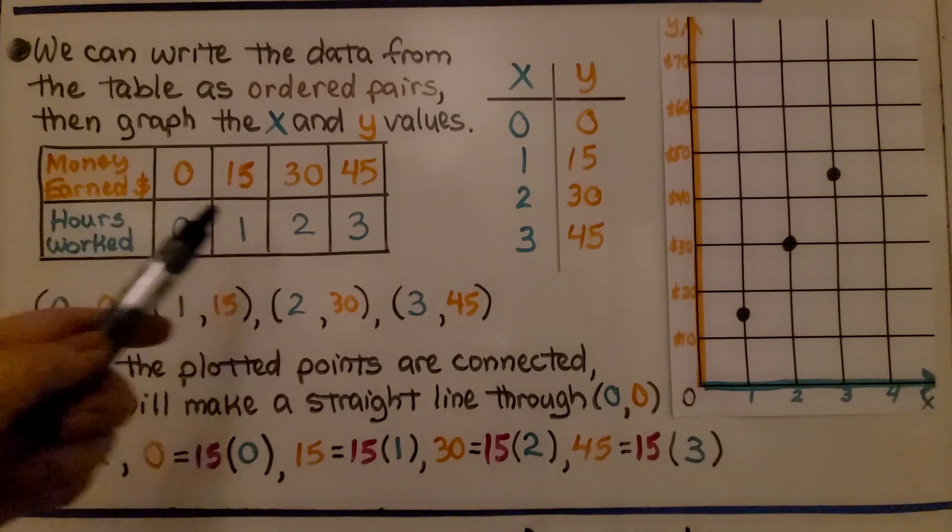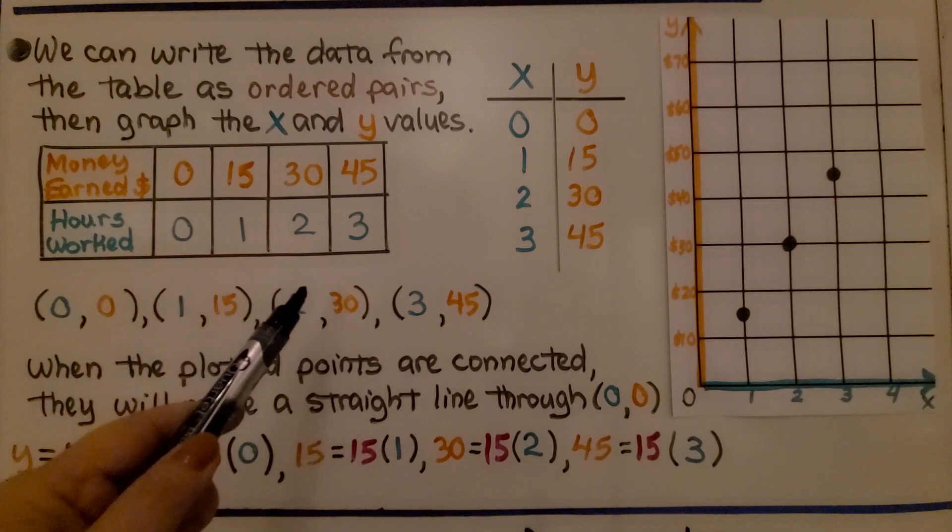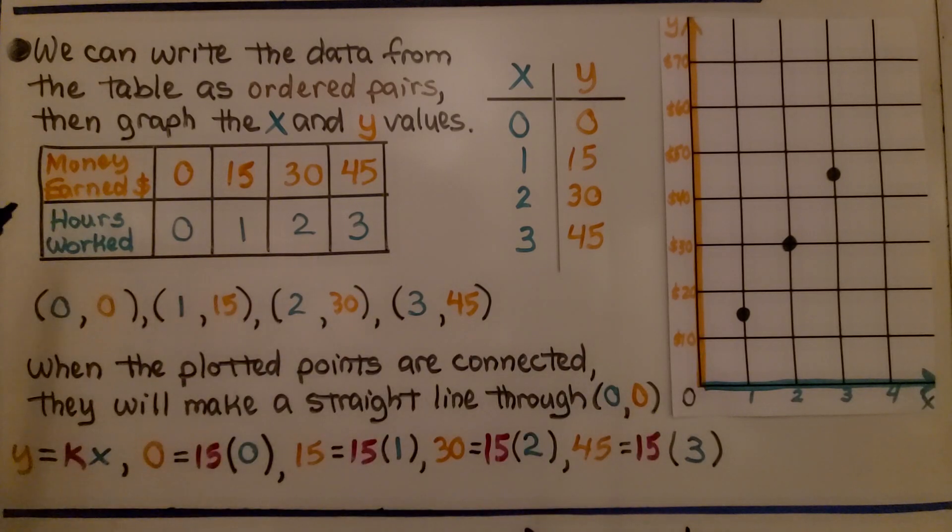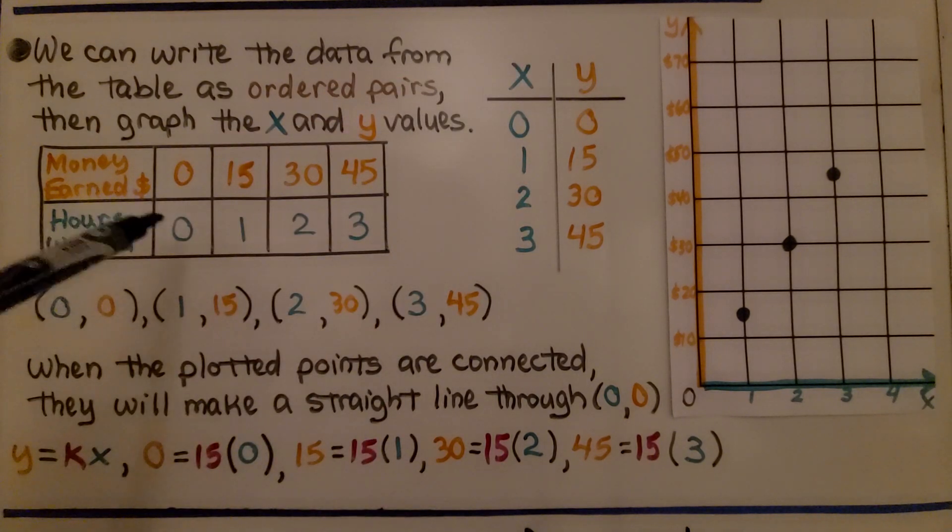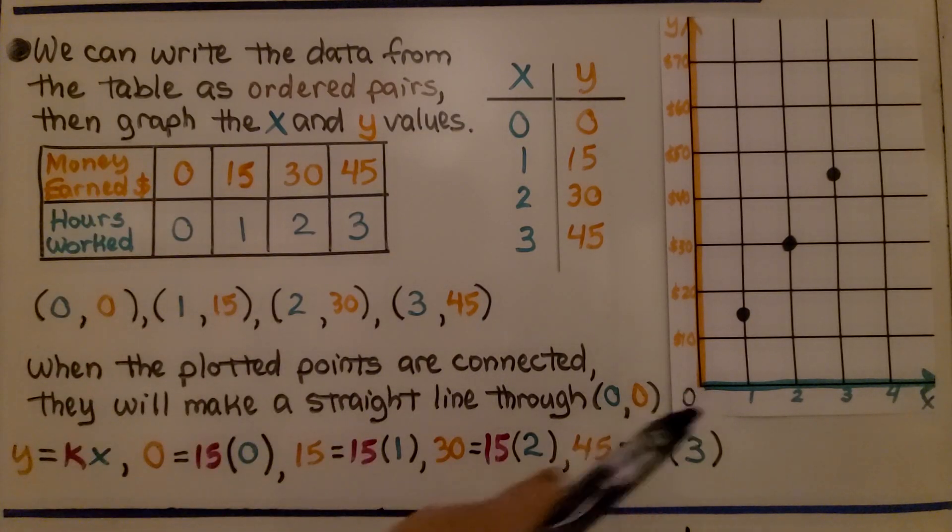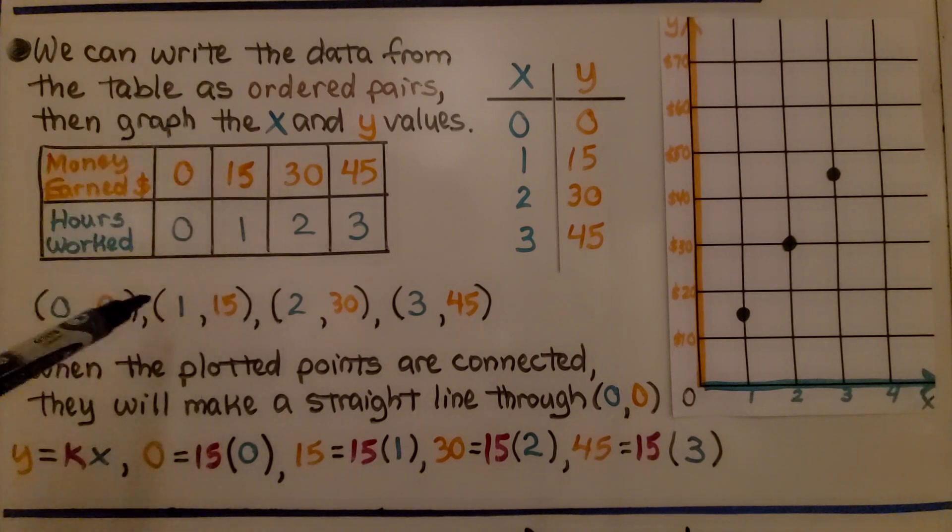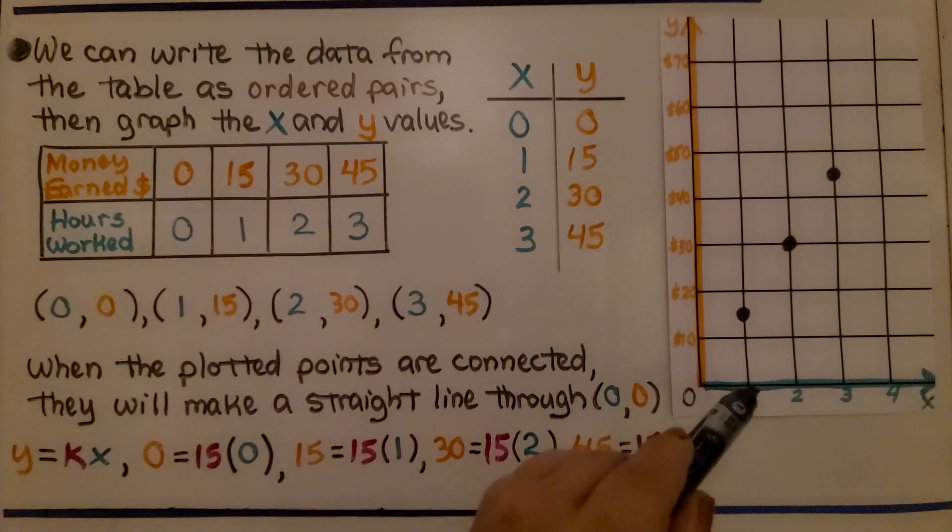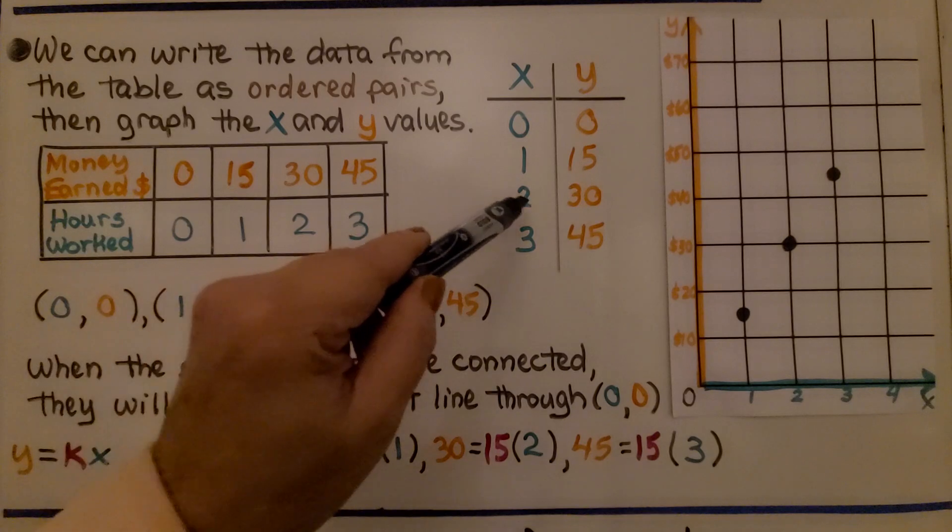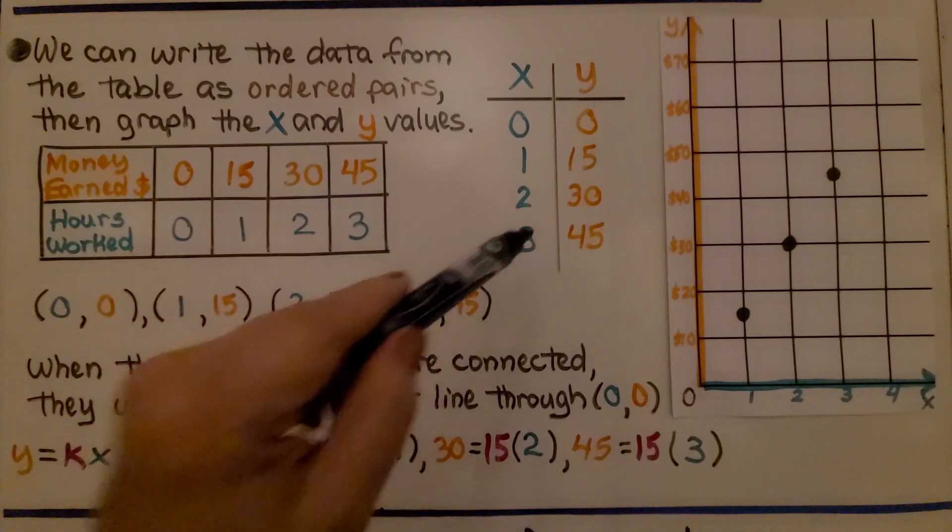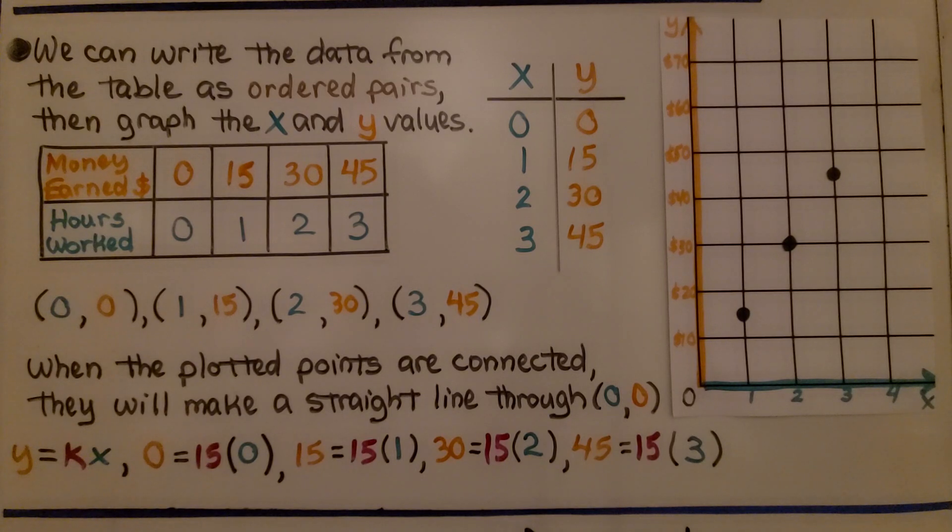We can write the data from the table as ordered pairs, then graph the x and y values. Remember, we have x on the left and y on the right. We have (0,0) for our origin down here. We have (1,15). (2,30). And (3,45). When the plotted points are connected, they'll make a straight line through (0,0), the origin. And this is proportional.